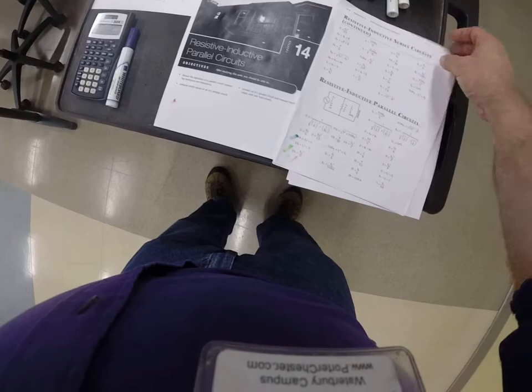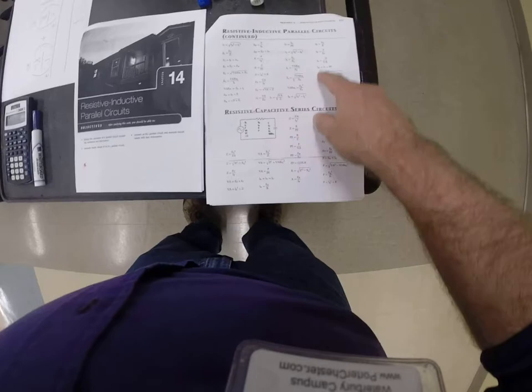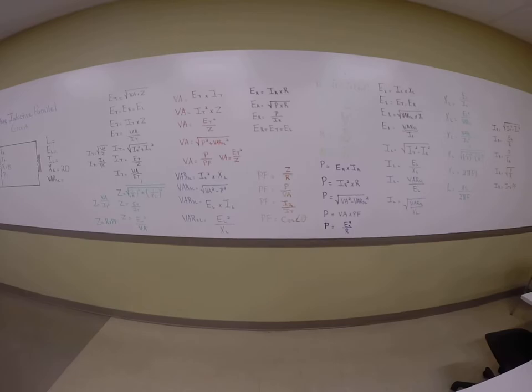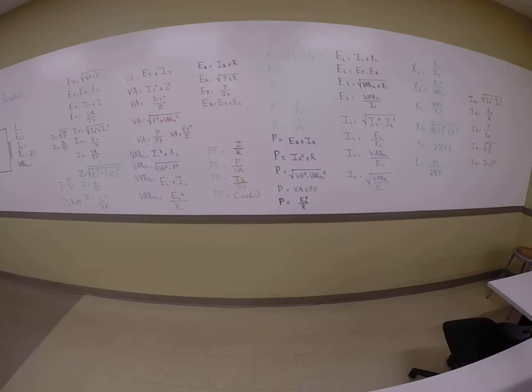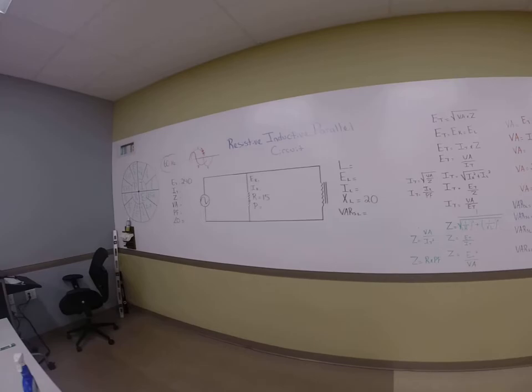We're going to start off on page 346. There's resistive inductive parallel formulas, and there are some on the back as well. Just like last time, I color-coded them and wrote all these parallel formulas up on the board. These formulas are not the same ones that were in the series circuit. A lot of them are changed and remodified. I put them up here to help out with this instruction. But you have your sheets in front of you.